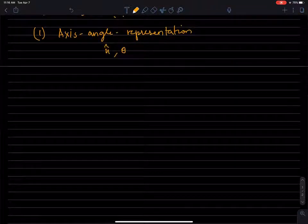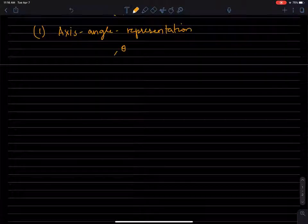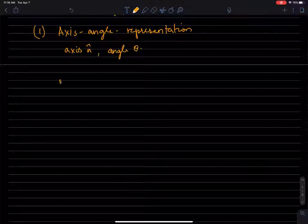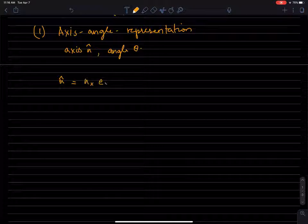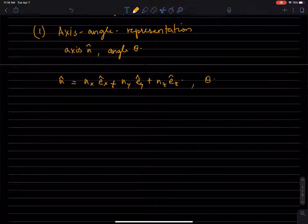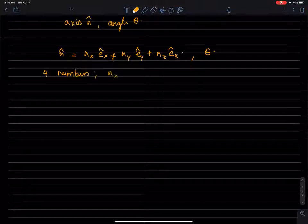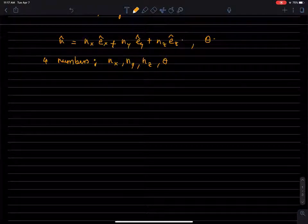Once you specify n and theta, you've specified the rotation. If you represent n in terms of unit vectors ex, ey, ez, it will be n_x*ex + n_y*ey + n_z*ez, plus of course theta. So once you have a coordinate frame, it's actually four numbers: n_x, n_y, n_z, and theta. So you can represent rotations with four numbers.